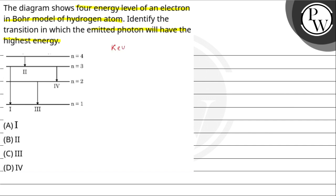The key concept here is that whenever an electron jumps from a higher orbit to a lower orbit, energy is released in the form of photons. The energy of that photon is delta E, which is equal to En2 minus En1, or Em minus En, where m is greater than n.